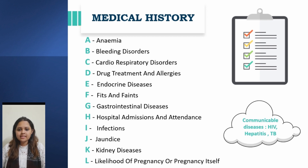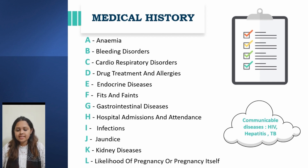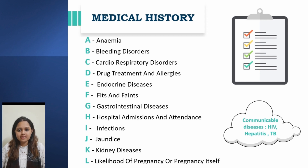Continuing the checklist: E for endocrine diseases, F for fits and faints, G for gastrointestinal diseases, H for hospital admissions, I for infections, J for jaundice, K for kidney diseases, and L for likelihood of pregnancy or pregnancy itself. In addition, we must check for a history of any communicable diseases like HIV, hepatitis, TB, and in the present scenario, COVID. Patients in the high-risk category for developing bacterial endocarditis must be given antibiotic prophylaxis.